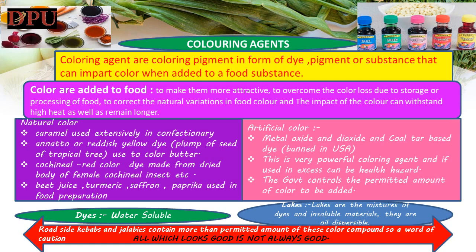The bases of artificial colors include metal oxides and dioxides, and coal tar-based dyes (banned in the USA). Artificial colors are very powerful coloring agents and if used in excess can be a health hazard. Artificial color regulations control the permitted amount of color to be added, but roadside kebabs and jalebis can contain more than the permitted amount of these color compounds — so a word of caution: all that looks good is not always good. Certified color additives are available as dyes, which dissolve in water and are available in powder, granule or liquid form, used in beverages, dry mixtures, baked goods, confectionery, dairy products etc.